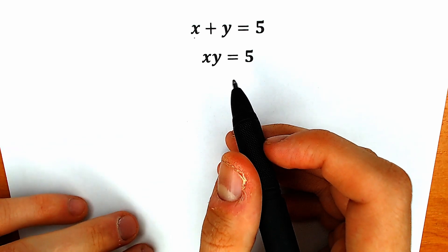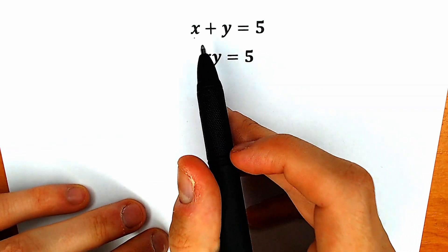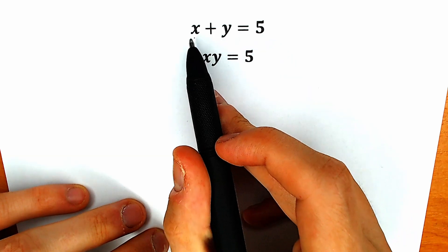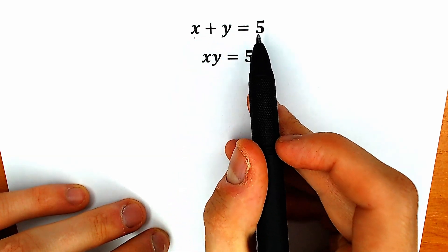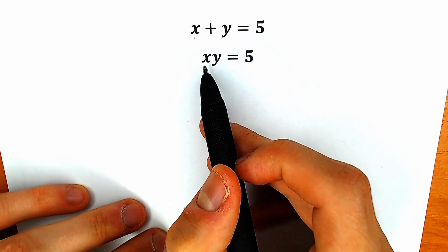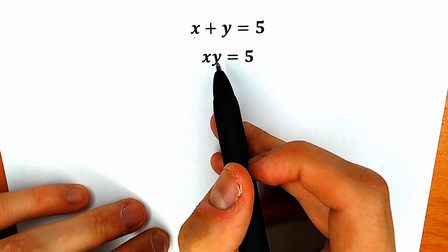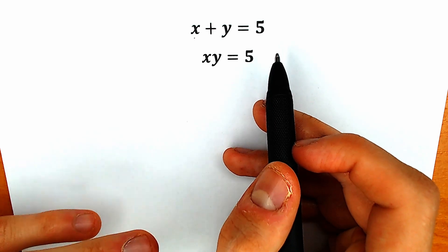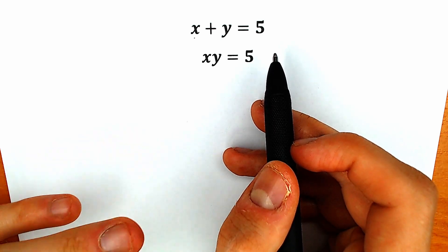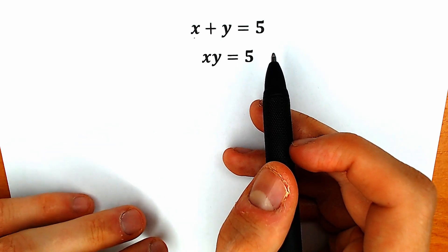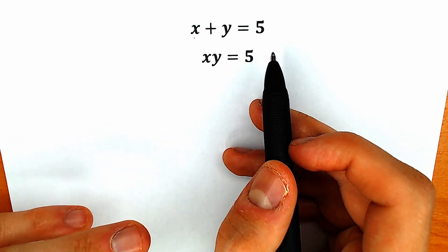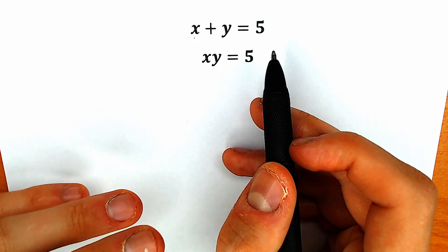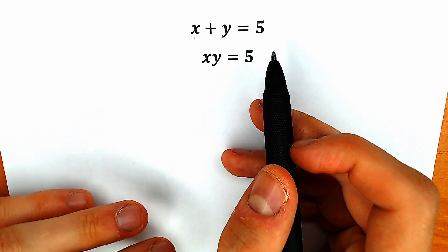Today we have a very interesting algebra question. We need to find x and y, given that x plus y equals 5, and the product x times y equals 5. If you have your solution, you can write it down in the comment section, and we will check our answers in a few seconds.